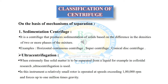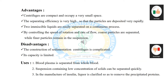Ultracentrifugation is based on the sedimentation type of centrifuge. When extremely fine solid matter is to be separated from a liquid — for example in colloid research — ultracentrifugation is used. In this instrument, a relatively small rotor is operated at a speed exceeding one lakh rpm and forces up to one million times gravity.